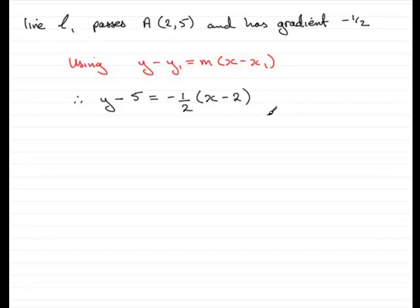Now, to put this in the form y = mx + c, what I'm going to do then is expand the bracket and at the same time add 5 to both sides. So I get y = -½x. Then we've got -½ times -2, so that's clearly plus 1.